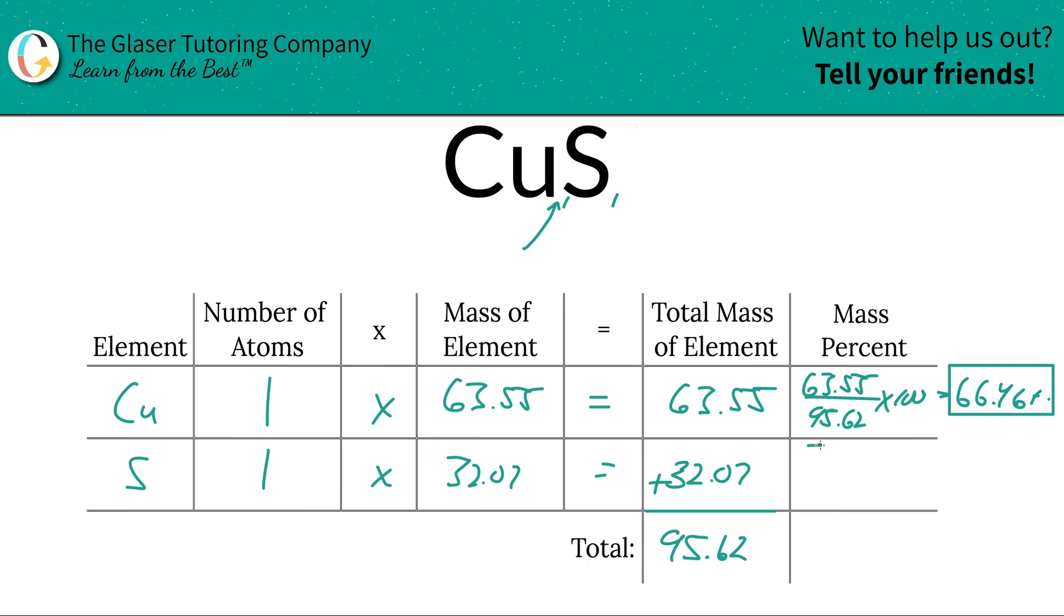And then sulfur is going to be the same thing. Take the total 32.07 divided by 95.62 times 100. This is a simple percent calculation: part over whole times 100. And then when we do that, it works out to be 33.54.